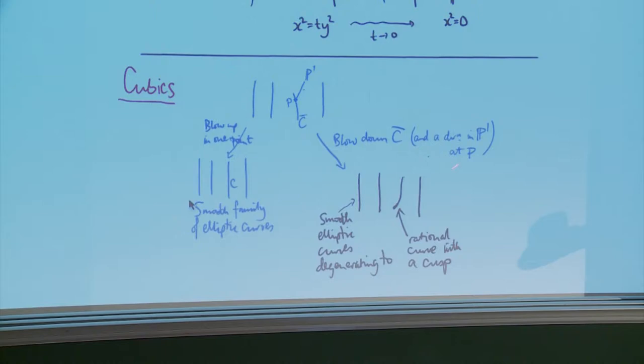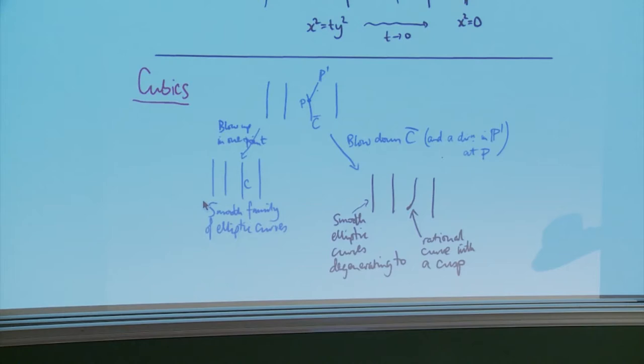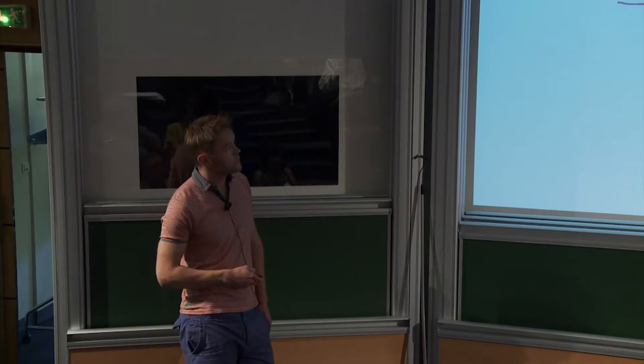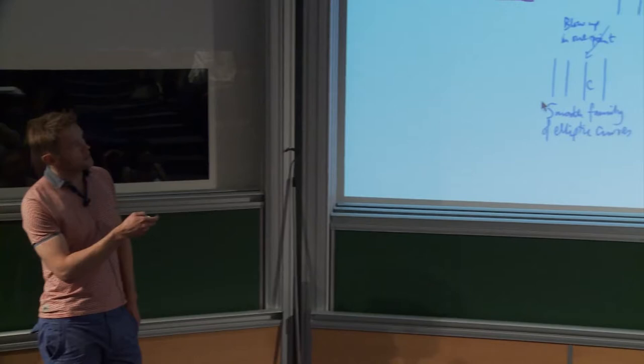The moduli space can be much bigger because now, by contracting this curve, you can vary it and get the whole moduli space of elliptic curves with one marked point attached to this P1. You end up with a huge orbifold. In Gromov-Witten theory you have to do integration over such degenerate contributions, where you have a P1 with an elliptic curve attached, the elliptic curve varying through the moduli of elliptic curves, and you integrate over that moduli space.